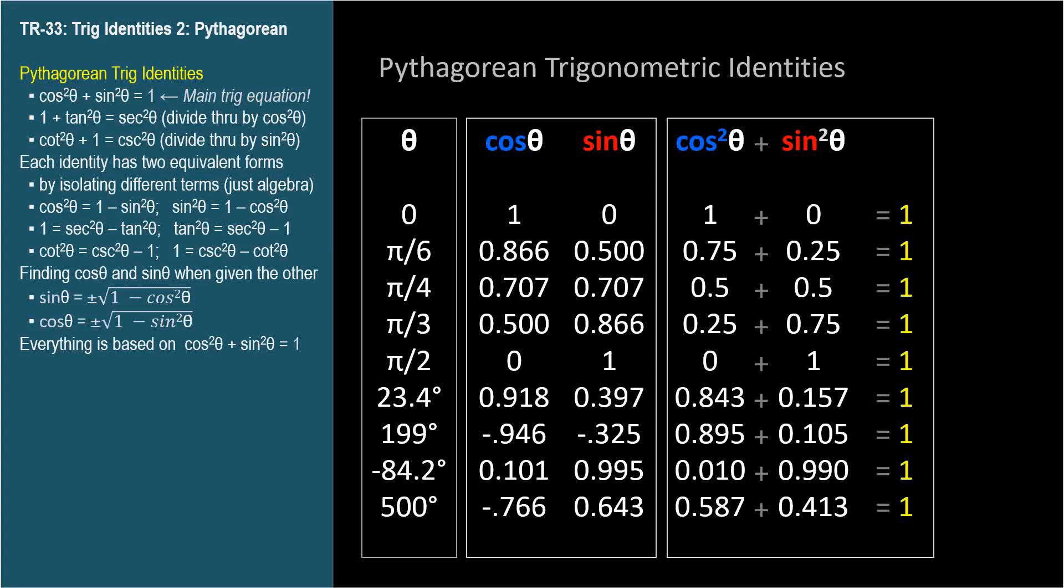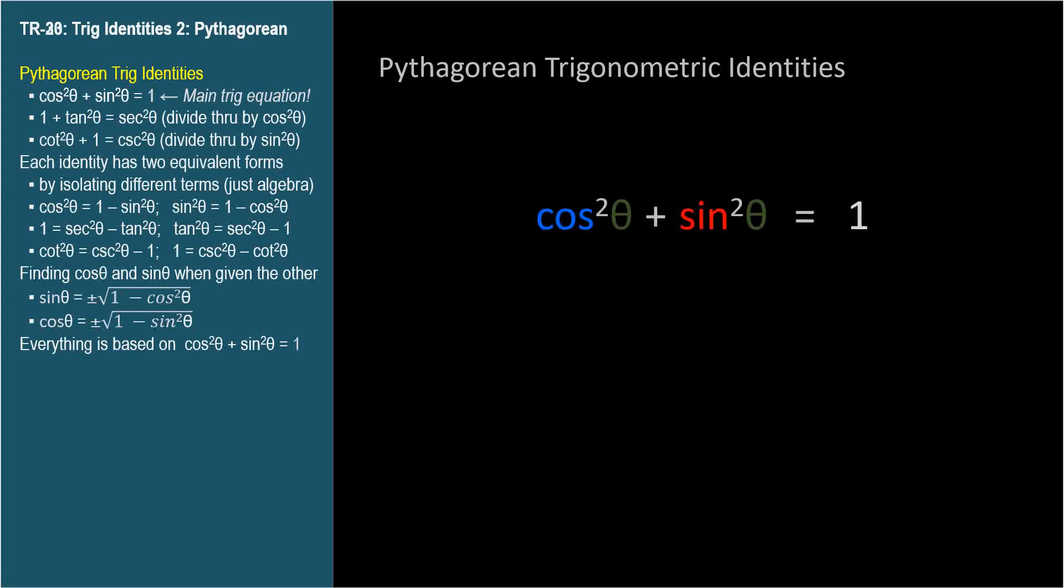We find another Pythagorean identity by taking this main equation and dividing each term by cosine squared theta. The first term becomes 1. The second term is sine squared theta over cosine squared theta. You should know that sine over cosine is tangent, so sine squared theta over cosine squared theta is tangent squared theta, which is the second term.